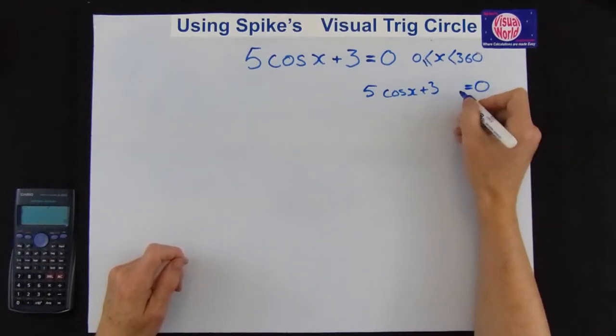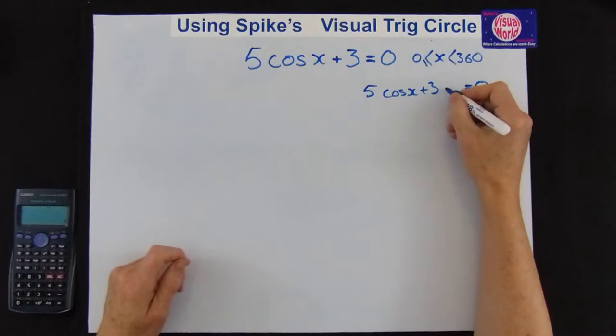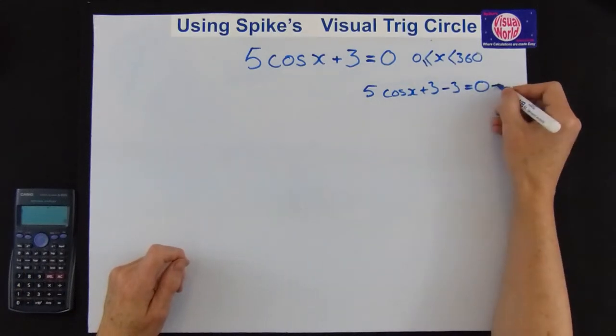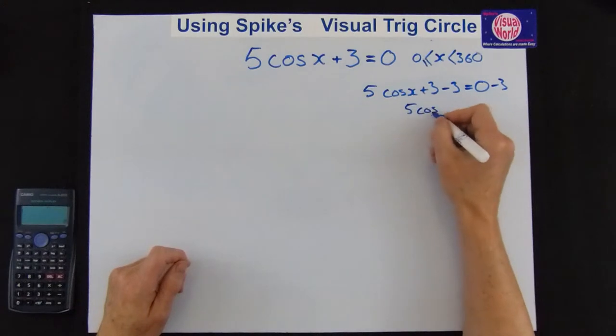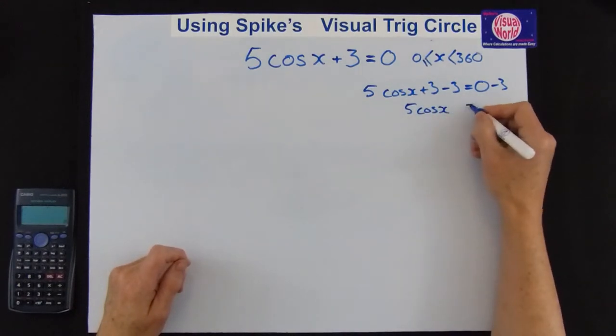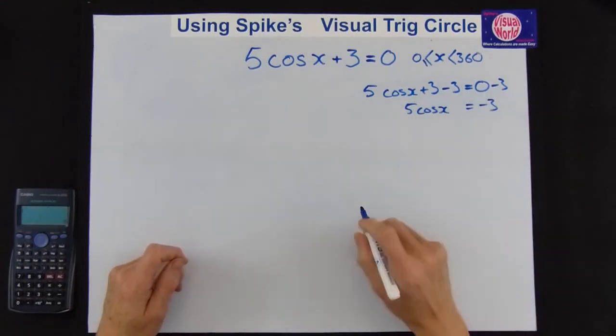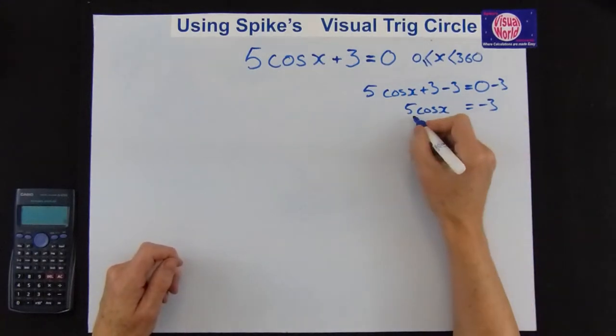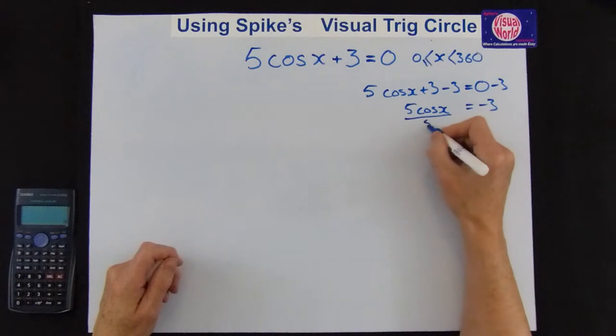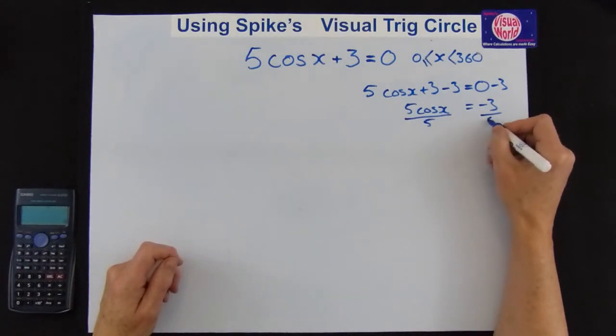Now the first thing we do to that equation is we get rid of that plus 3. So the opposite of plus 3 is minus 3. So take 3 off both sides and we're left with 5 cos x equals minus 3. We now get rid of that 5. It's multiplying so do the opposite. Divide by the 5.